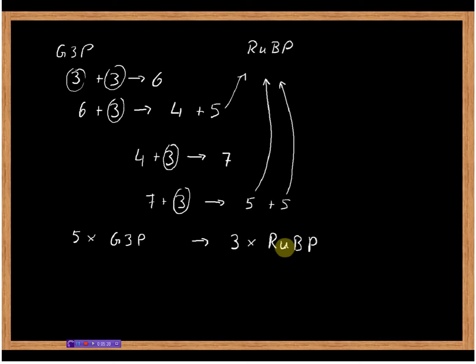but for the time being let's not worry about that. So what we just see in this scheme is that from these three carbon blocks we can very easily just simply do the sums: three plus three gives six, six plus three gives nine which is four plus five, four plus three gives seven, seven plus three gives five plus five, and with this order of events